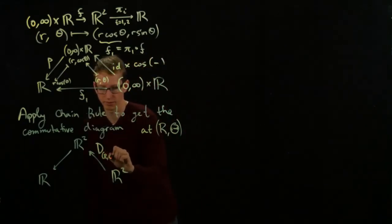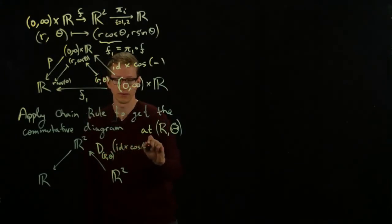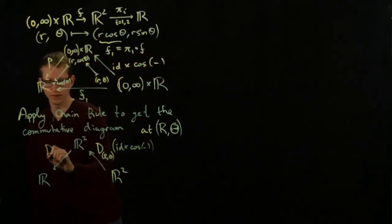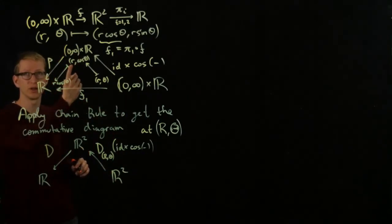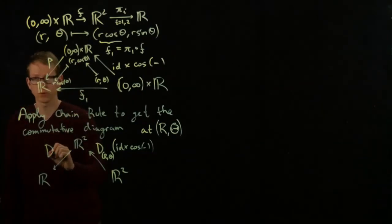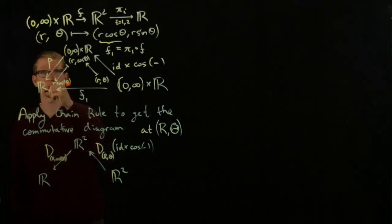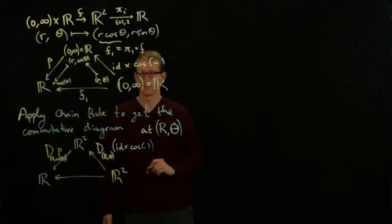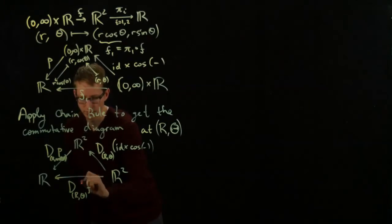This is going to be at (R, Θ) applied to the function of the identity cross cosine. Here we have D. Remember what the chain rule says: we push this element forward, so that becomes (R, cos Θ), and then we apply the differential at that point. So this is at (R, cos Θ) of the function P. The differential of F₁ at (R, Θ) equals this composition.